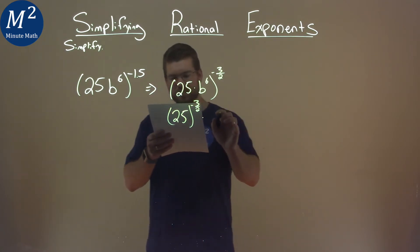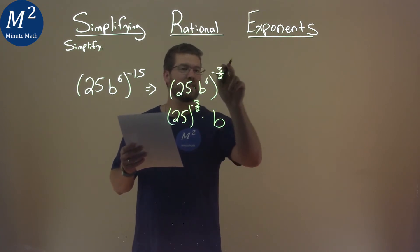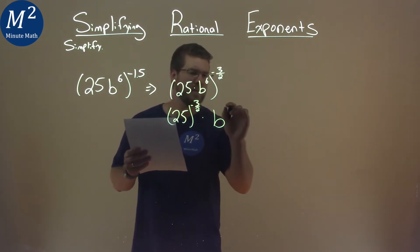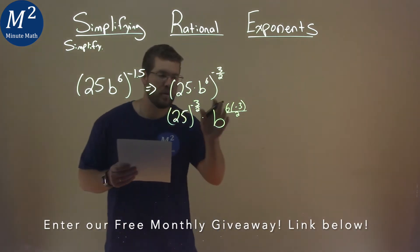Times b, b to the 6th gets multiplied by the negative 3 halves. And so it's 6 times a negative 3 halves like this, and that's all to the power.